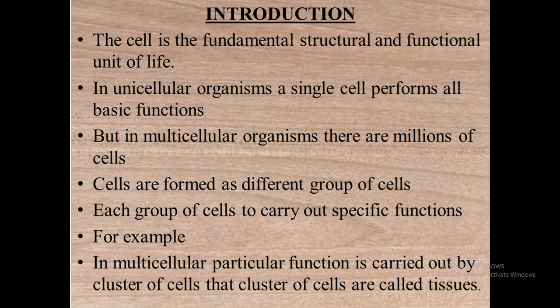Amoeba is a unicellular organism because it is made up of only a single cell. That single cell constitutes the whole body of an amoeba, and carries out all the functions of an organism like digestion, respiration, and locomotion. What about a plant or a human being? Is a single cell enough? Of course not — they need millions of cells to make up their entire body.